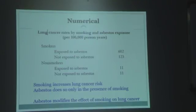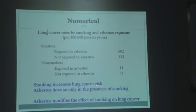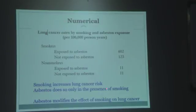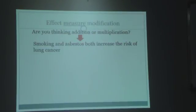If asbestos exposure and lung cancer is your main exposure-outcome pair, smoking becomes the third factor—your confounder or effect modifier. Smoking increases on its own the risk of lung cancer. Asbestos also increases the risk of lung cancer, especially in the presence of smoking. So asbestos modifies the effect of smoking on lung cancer—it makes it go up. But in the absence of asbestos, smoking still increases lung cancer. When asbestos adds on to smoking, the risk of lung cancer shoots up.